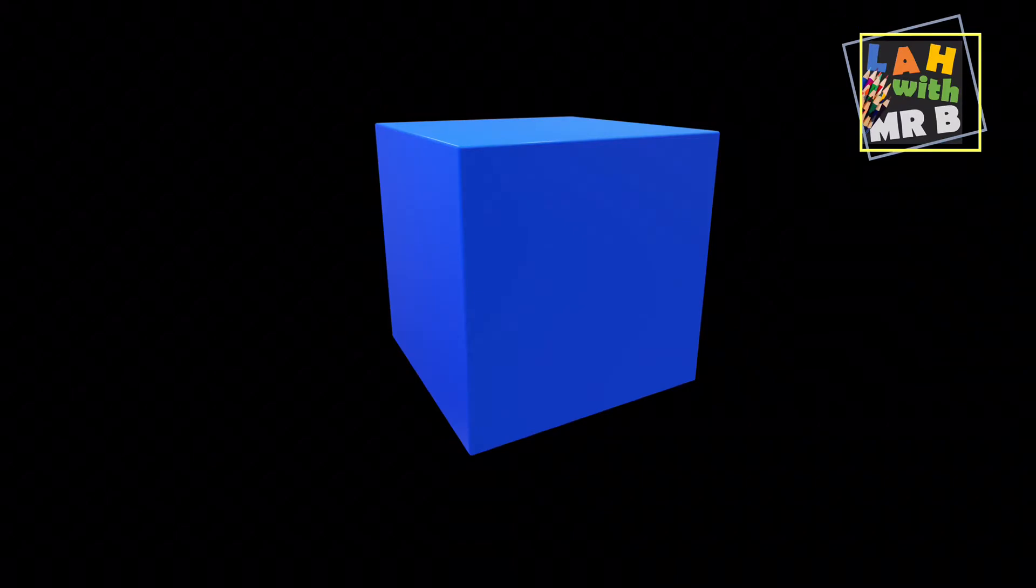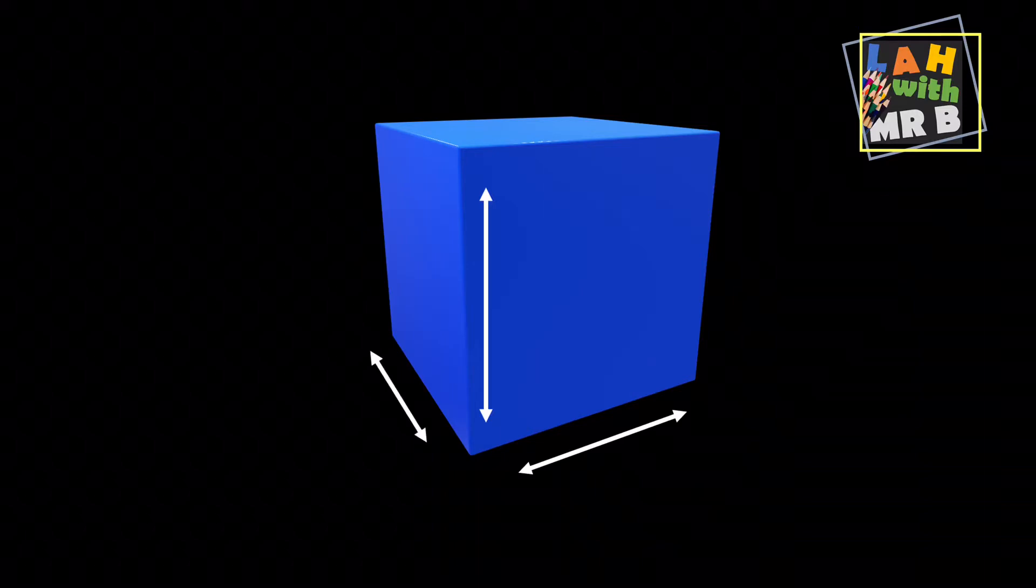To start with, let's actually have a look at a cube. Now the difference between a cube and a square is that not only do we have to think about the height and the width, but we also have to think about the depth of the shape too. And in a cube, all three of these have to be equal.